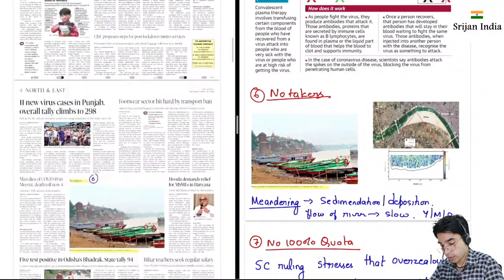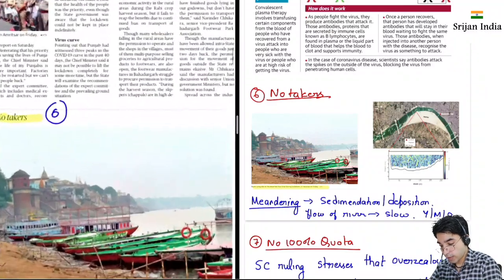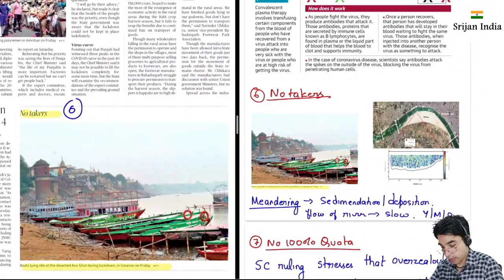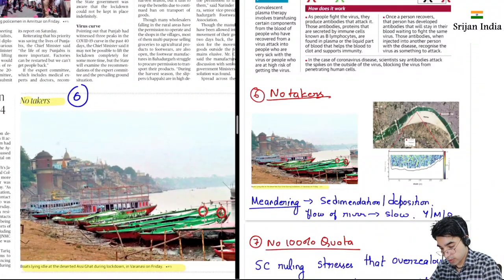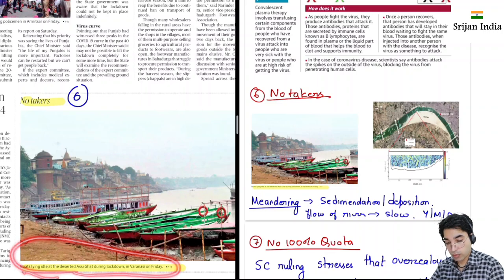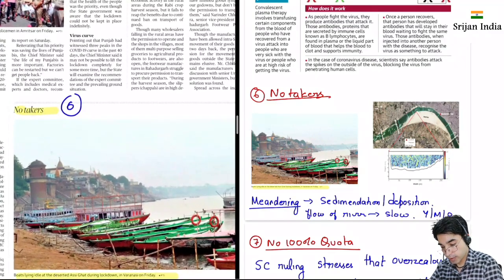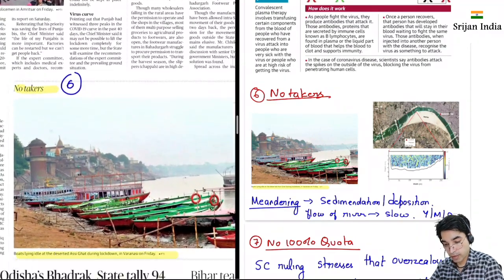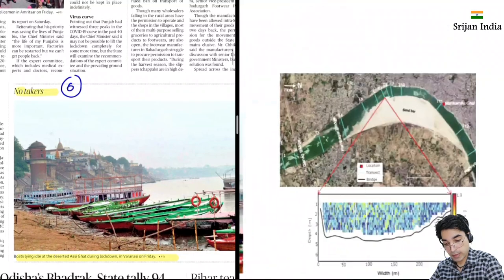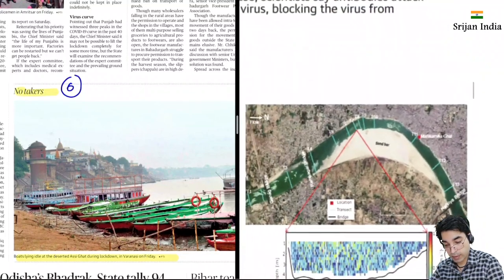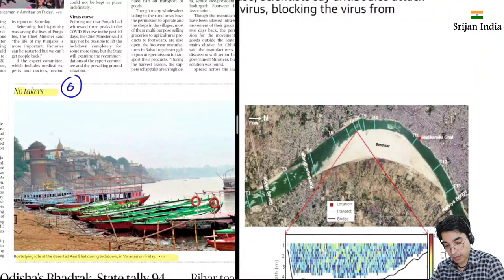This is page number 4 — yahan likha hai no takers. Yeh Assi Ghaat hai — Assi Ghaat Varanasi, Uttar Pradesh mein hai. Yeh jo ghaat hai Banaras ki, bahut ache ghaat bane hue hai. Reason kiya hai? Yahan pe river ka bahut meandering hota hai — jaise Ganga aa rahi hai, woh Ganga is taraf pura meander karti hai.